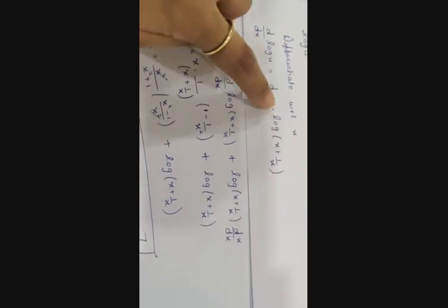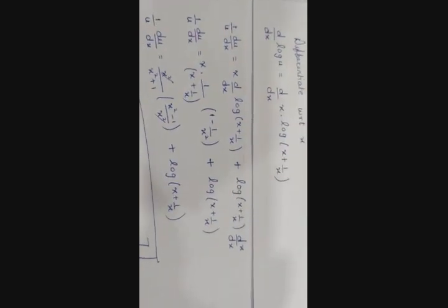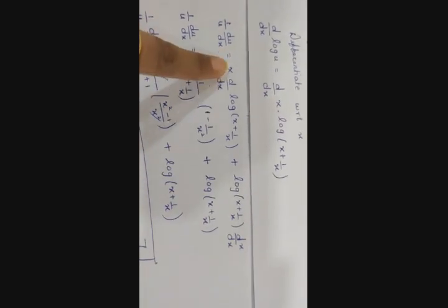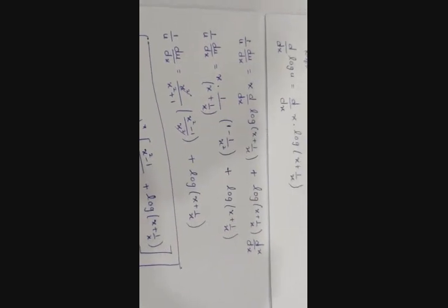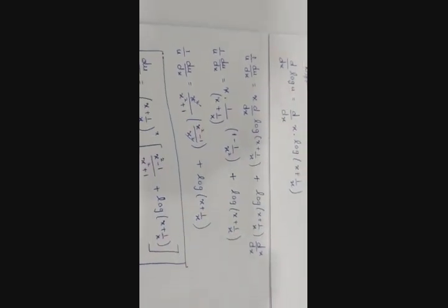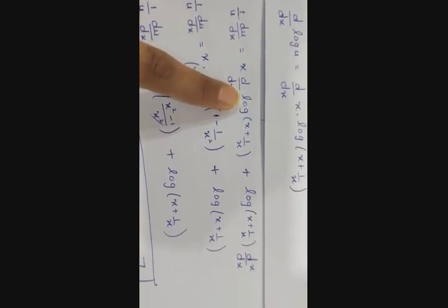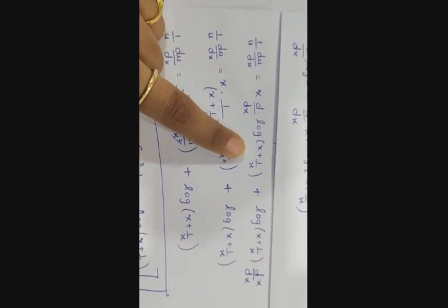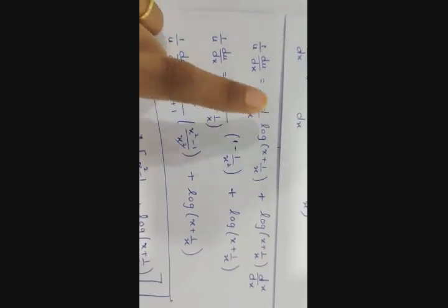Now differentiating x · log(x + 1/x): two functions are in multiplication, so we apply the product rule — first function as it is times derivative of second, plus second as it is times derivative of first. To differentiate log(x + 1/x), we note this is a composite function, so chain rule applies. The derivative of log x is 1/x, but x is replaced by (x + 1/x), so we differentiate (x + 1/x) as well: derivative of x is 1, derivative of 1/x is −1/x².